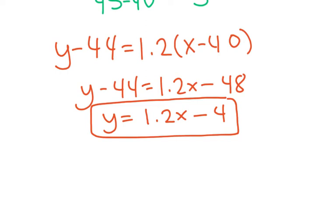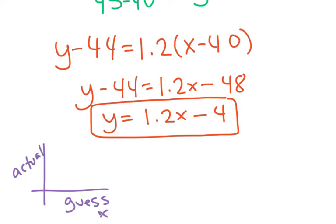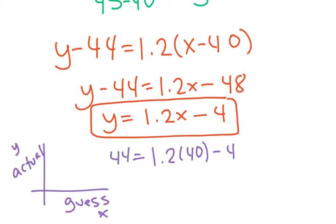Think about what this means for the guess my age activity: the x-axis was how much you guessed they were and y was the actual age. You can use this to say: if I guessed somebody was 40, how old were they really? Doing the math — 1.2 times 40 minus 4 gives 44. So I usually guess people are younger than they are. How does yours compare — do you usually guess older or younger?